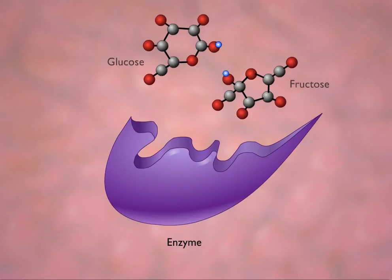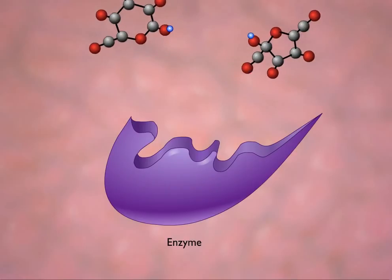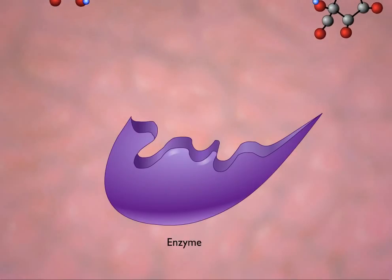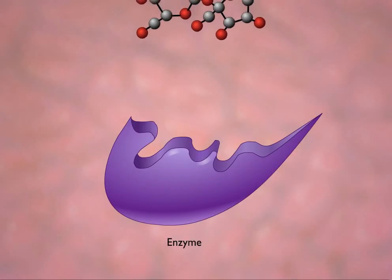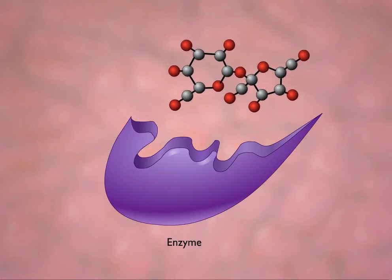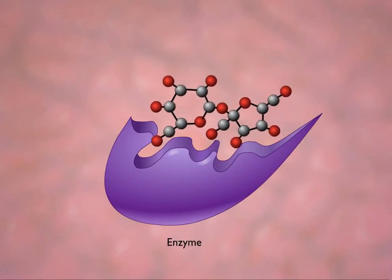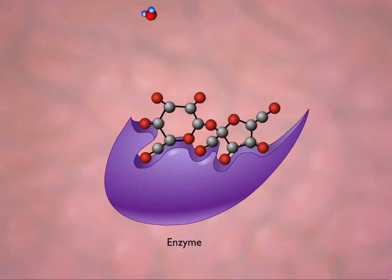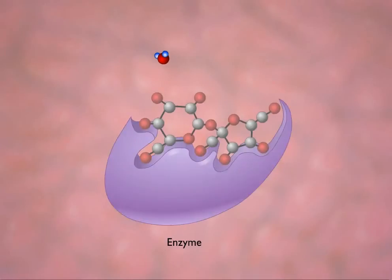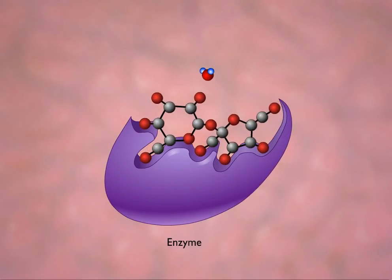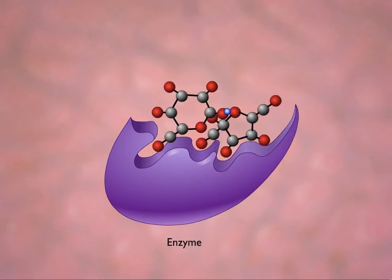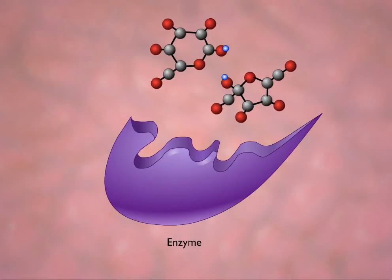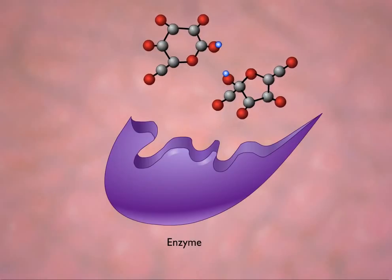The two monosaccharides float away and the site becomes available for another sucrose molecule to bind, change the enzyme's configuration, and be hydrolyzed. This action can be repeated many times until the enzyme becomes denatured, is inhibited, or just wears out.